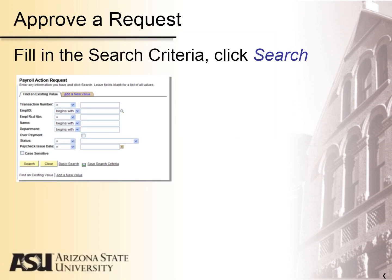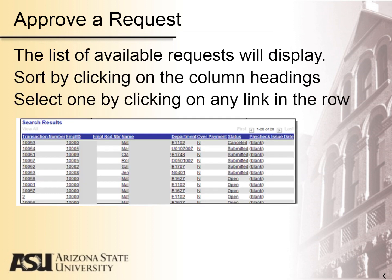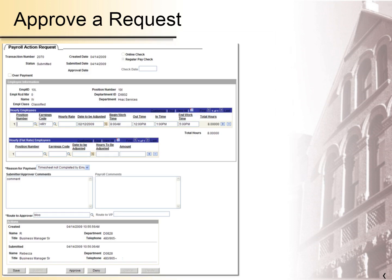To approve requests, you must have Pay Manager access in PeopleSoft. The navigation is similar — use the same navigation as before. When you arrive at the screen, instead of clicking Add a New Value, put in the search criteria for the requests in your department and click Search. The results of your search will display. You can sort the display by clicking on the column headings. Click on a link in any row to retrieve that request. Definitions of the different statuses are listed in your Business Process Guide. Review the request, add any comments for OHR Payroll, and click on Approve or Deny — this will forward the request to payroll via PeopleSoft.